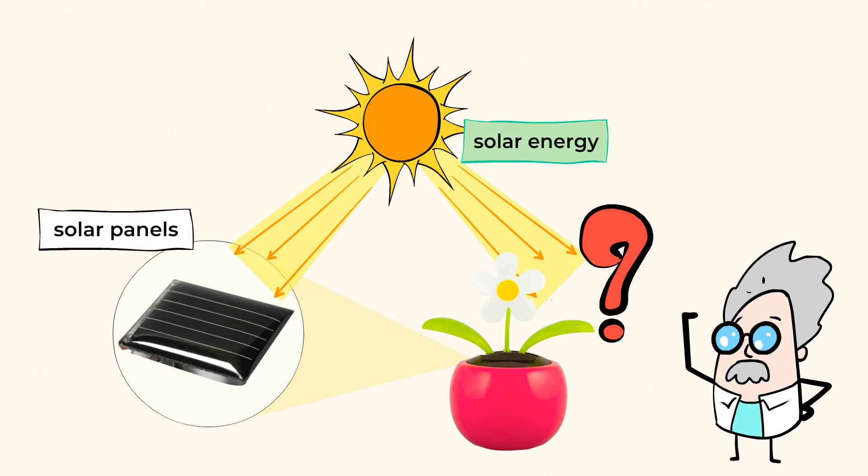Well, the toy has a few solar panels on it. These solar panels are able to take energy from the sun. And as it passes through the solar panels, the light is transferred into electrical energy, which then moves the little toy back and forth.